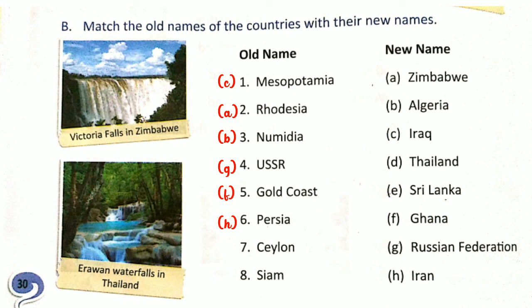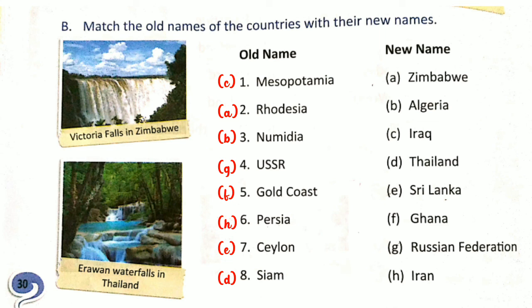Number 7, Ceylon. Ceylon is the old name and the new name is Sri Lanka. Sri Lanka is the new name of Ceylon. Number 8 and last, Siam. Siam is the old name and the new name is Thailand. Here we can see a Ravan waterfall in Thailand. Thailand is the new name of Siam.